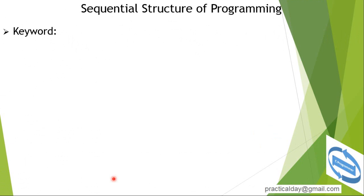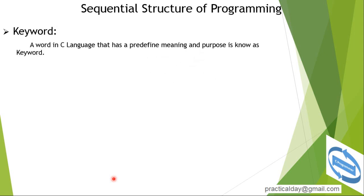In sequential structure of programming, we will learn what is a keyword. A keyword name is the same as a standard identifier. A keyword in C language is a word that has a predefined meaning and purpose. It cannot be changed or redefined by the user, developer, or programmer.